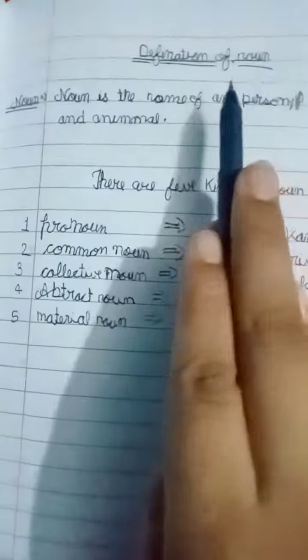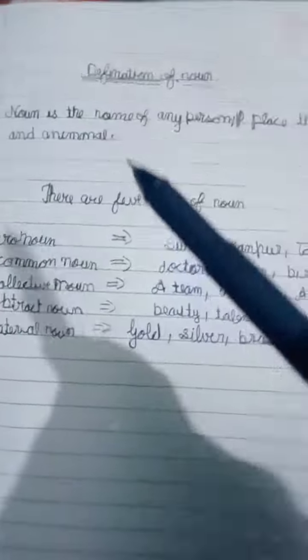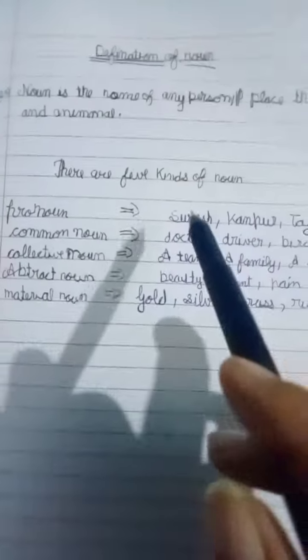Hello friends, welcome to my channel. Today we are going to explain the chapter of the noun. This is the definition of noun: noun is the name of any person, place, thing, and animal.